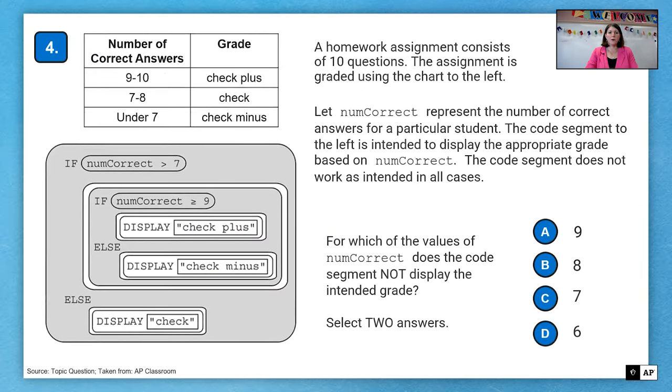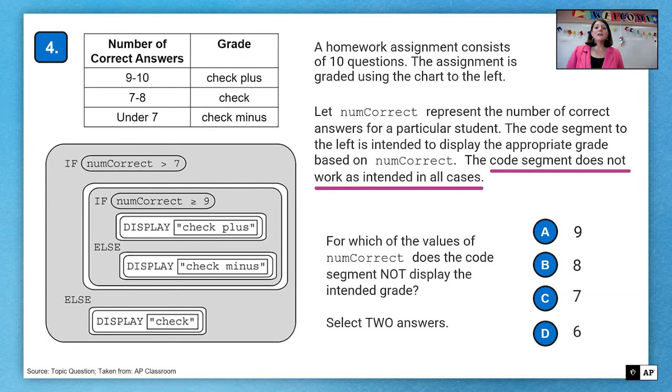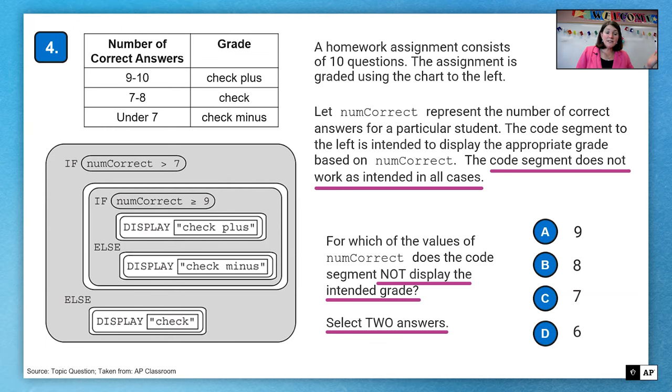On to question four. A homework assignment consists of 10 questions. The assignment is graded using a chart to the left. Let numcorrect represent the number of correct answers for a particular student. The code segment to the left is intended to display the appropriate grade based on numcorrect. The code segment does not work as intended in all cases. So for which of the values of numcorrect does it not display the intended grade? And we have to select two answers.